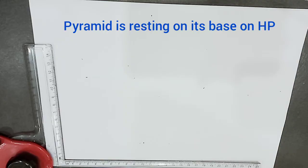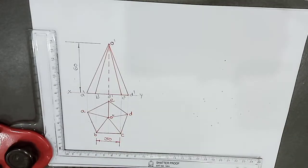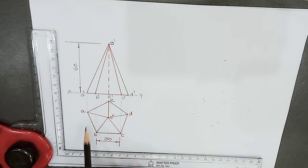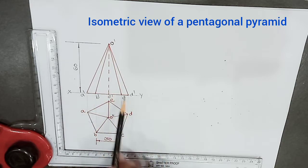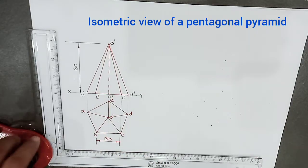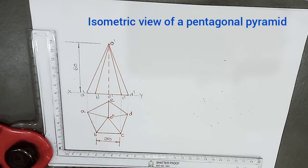Since the pyramid is resting on its base on the HP, the top view will be a pentagonal shape. After drawing the top view, the front view will be a triangle. This is the top view of a pentagonal pyramid — its base is pentagonal. After drawing the top view, we draw the projectors, from which we get the front view. So this is the top view and front view of a pentagonal pyramid. Now we have to enclose the top view in a rectangle.